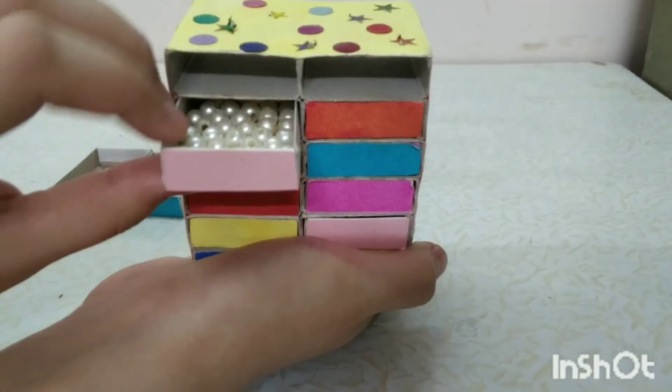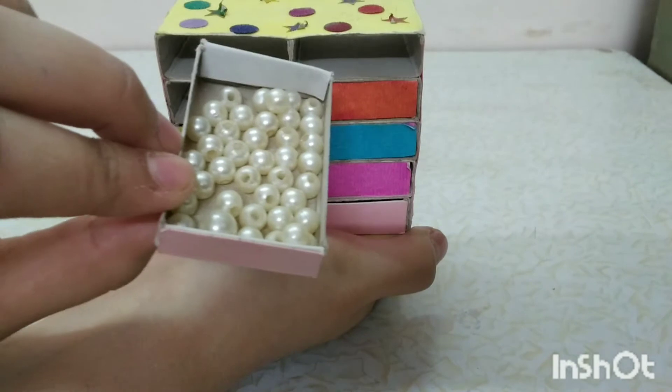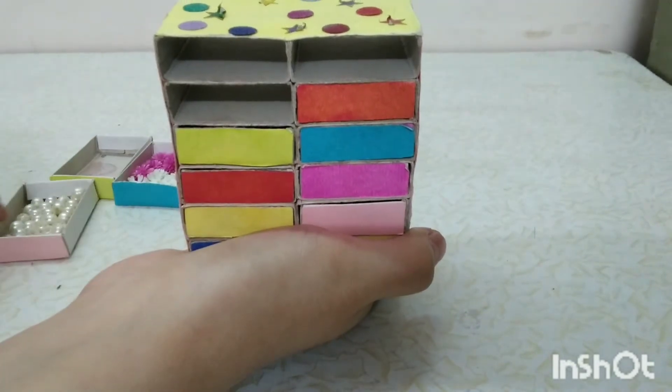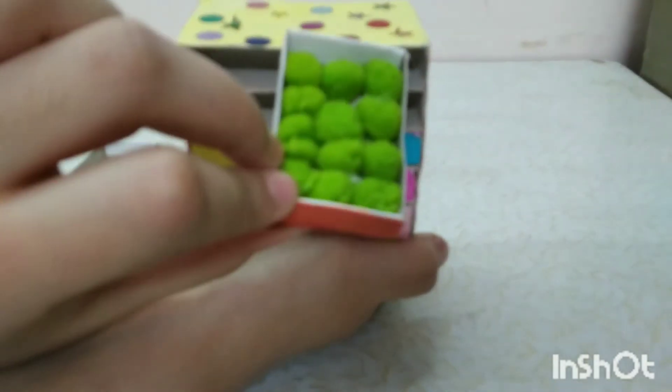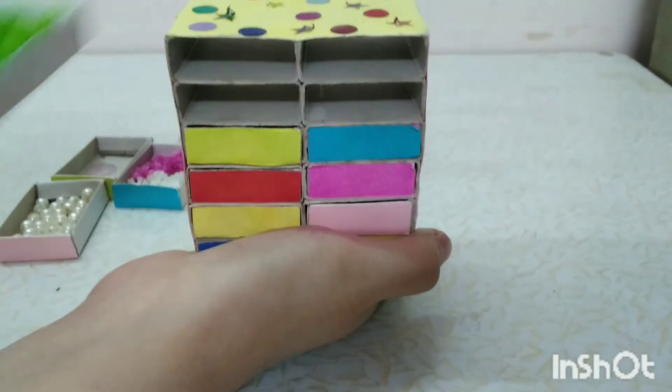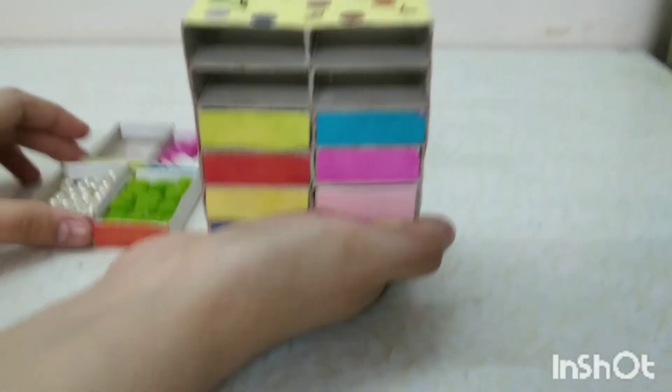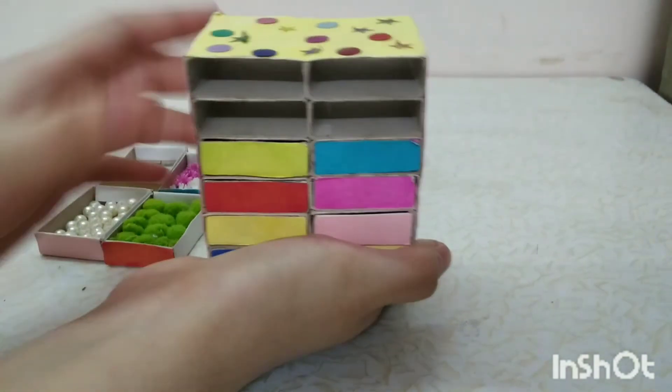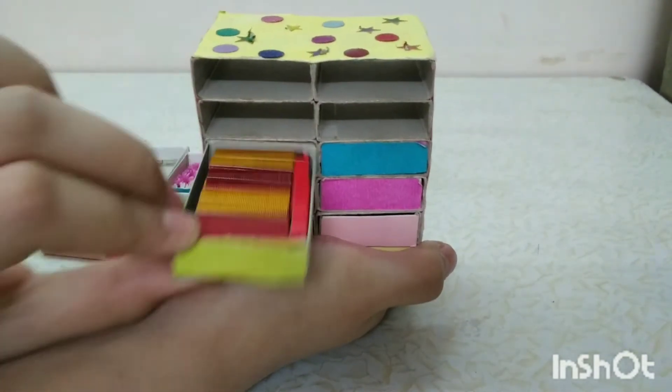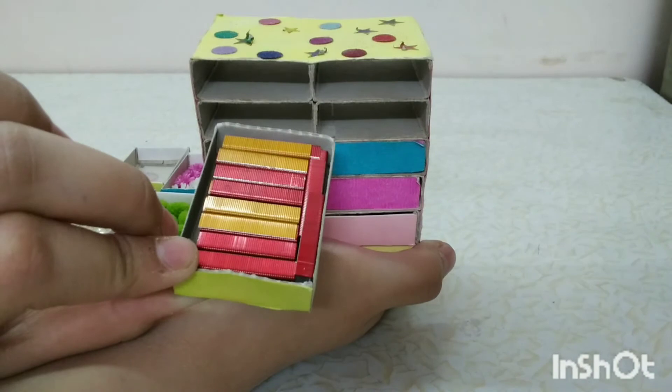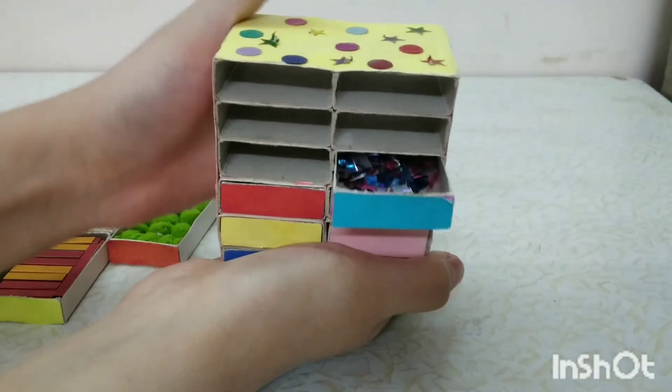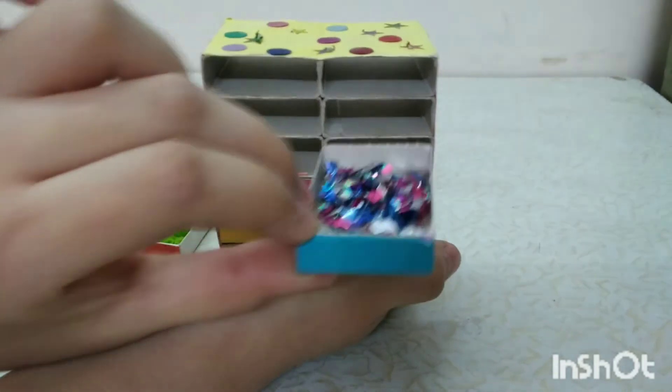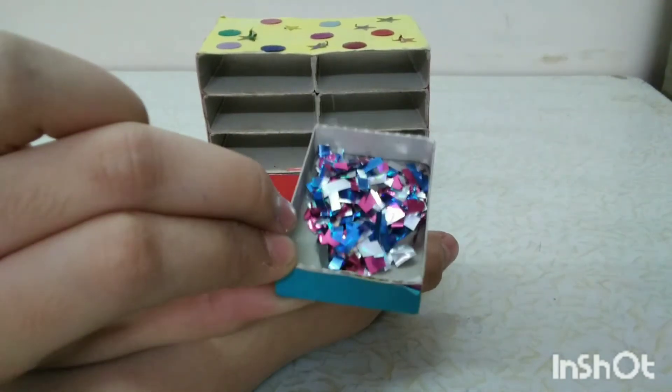Then in the next drawer I have some white beads. In the next drawer I have some pom-poms which are in green color. In the next drawer I have some stapler pins, then in the next drawer I have some sparkles.